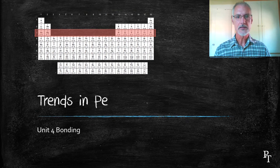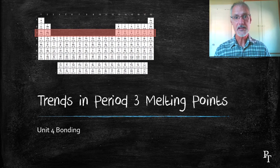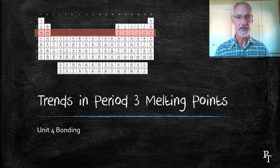Now that we've completed bonding, I want to take a look at the trend in the melting points across the period three elements. This is an idea we came across earlier in unit number three on periodicity.